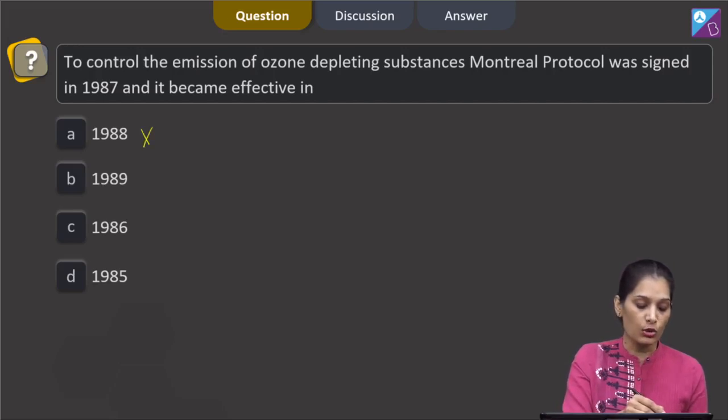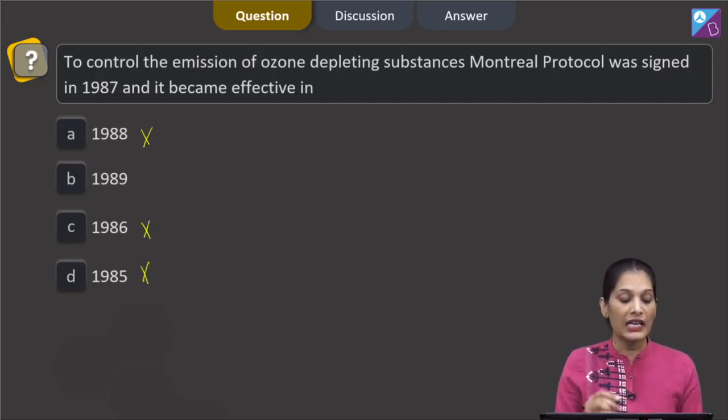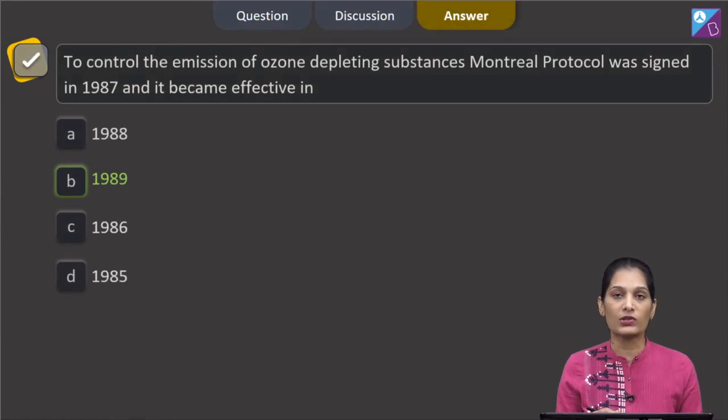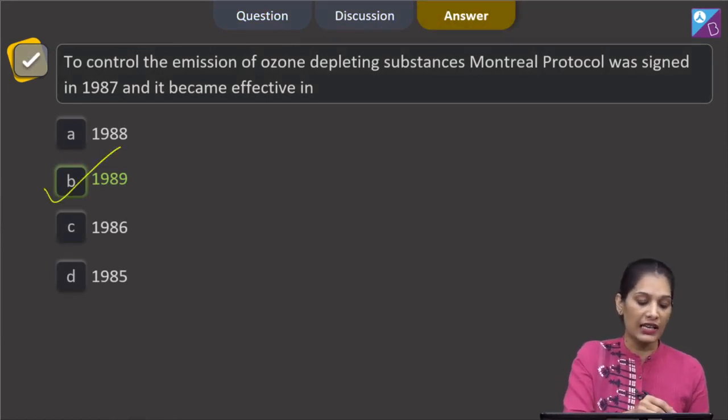So, in 1988, no. 1986, no. 1985, no. It became effective in 1989. So the correct option for the given question is B which says 1989.